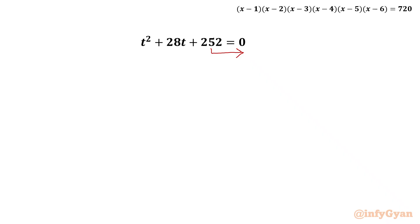The coefficient of t is 28. Half of 28 is 14, and the square of 14 is 196. We add 196 to both sides.